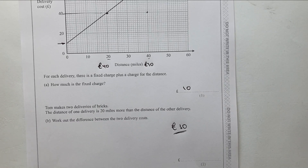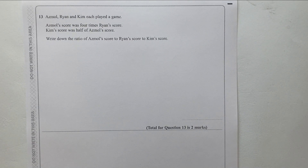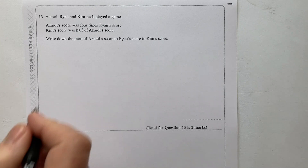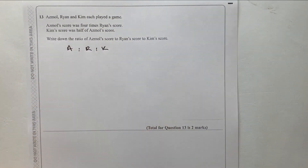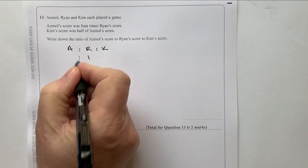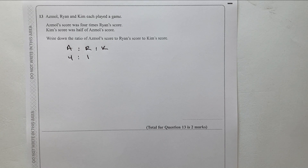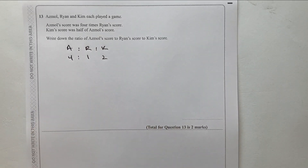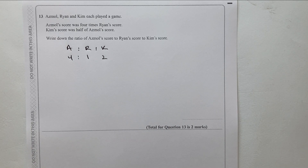Question thirteen: Asmol, Ryan and Kim each played a game. Asmol's score was four times Ryan's score; Kim's score was half of Asmol's score. Read carefully: if Ryan scored 1, then Asmol scored 4. Kim's score is half of Asmol's, so Kim scored 2. The ratio of their scores is 4 : 1 : 2, and that's the two-mark answer.